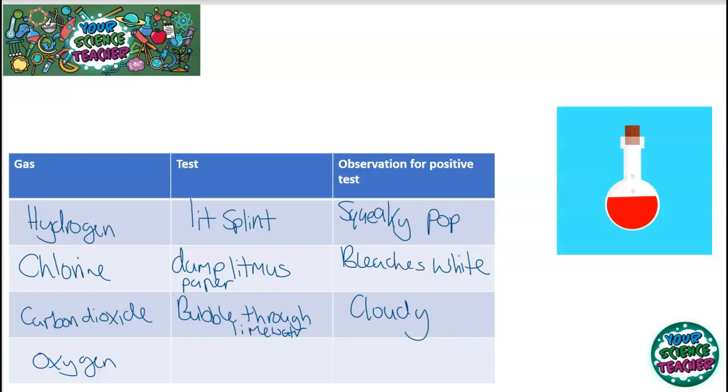And oxygen, what you need to do with oxygen, because obviously oxygen is needed for combustion, you put in a glowing splint into a test tube containing oxygen. And what you should see is that glowing splint relight. So from this, you could determine which gas you have present by doing these tests. Hopefully you've done them before in a laboratory so you can actually see what they look like as well.